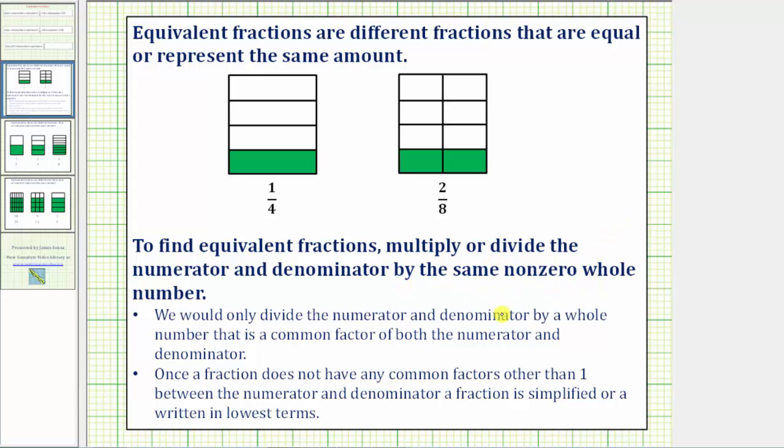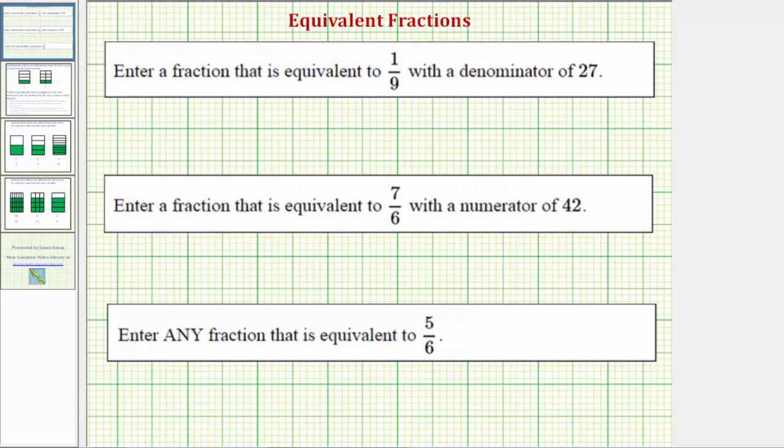Going back to our example, we're given the fraction 1/9, and we're asked to determine the equivalent fraction to 1/9 that has a denominator of 27. Looking at the denominators, notice how because 9 times 3 equals 27, if we want an equivalent fraction to 1/9 with a denominator of 27, we need to multiply the numerator and denominator of 1/9 by 3.